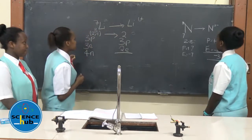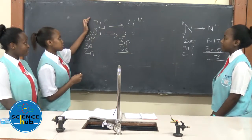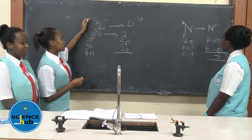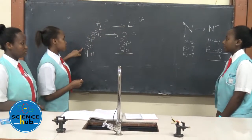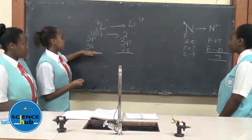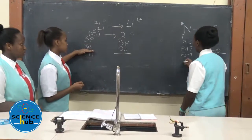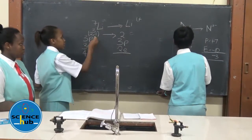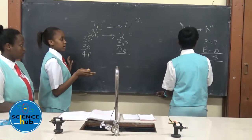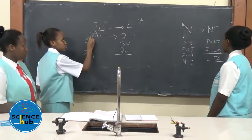So, as seen here, we're going to use this example of lithium. Lithium has three protons, three electrons, and four neutrons, but for now we can focus on the number of protons and electrons. The electron arrangement of the lithium element is 2-1.